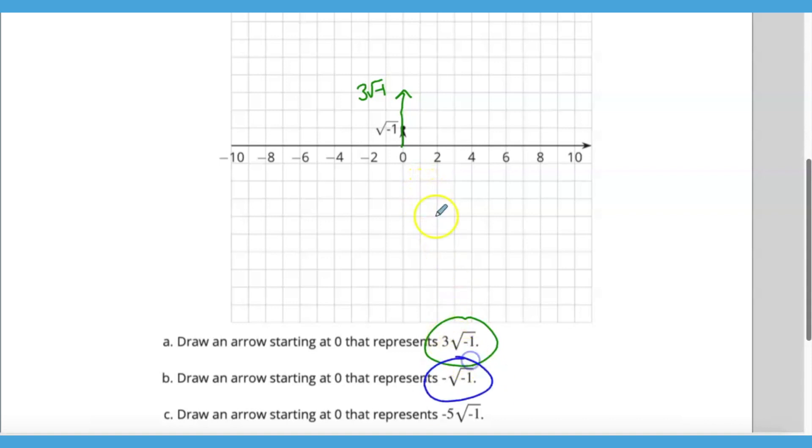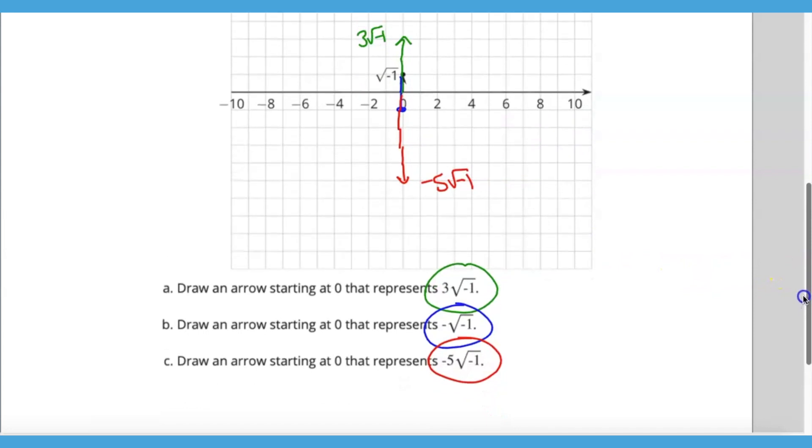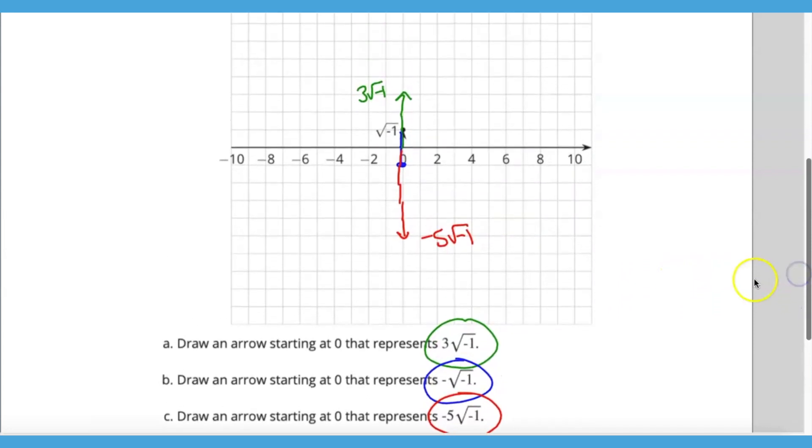The opposite—if this one goes up, the opposite must go down. Then we could have negative five times the square root of negative one, so that's one, two, three, four, five, and that arrow could represent negative five times the square root of negative one. What we're doing is showing that we need another number line to represent solutions to this equation, and that is building the imaginary number line or the complex number system.